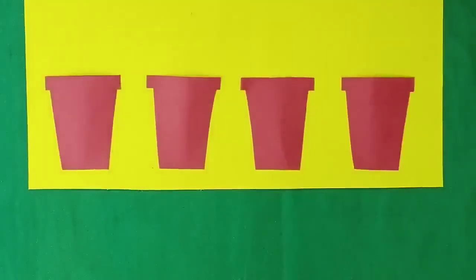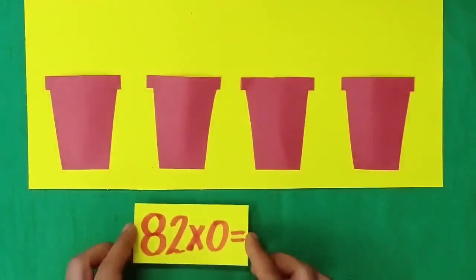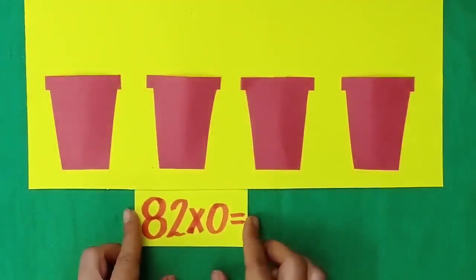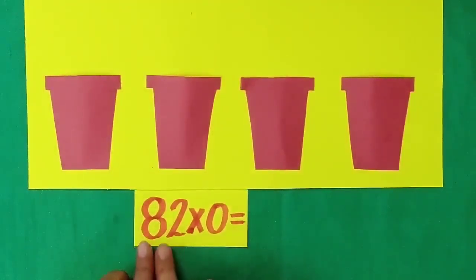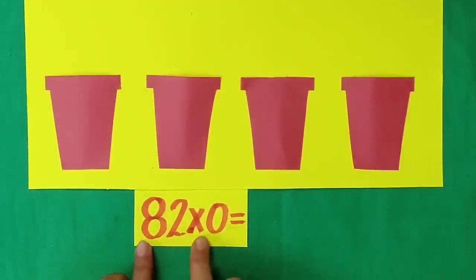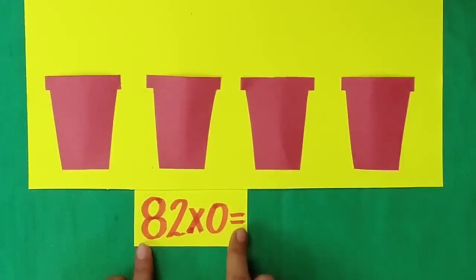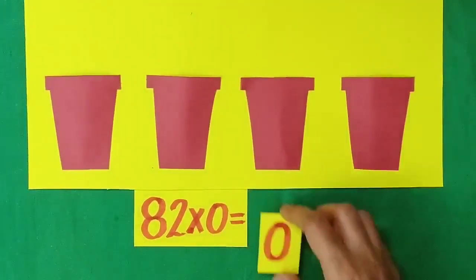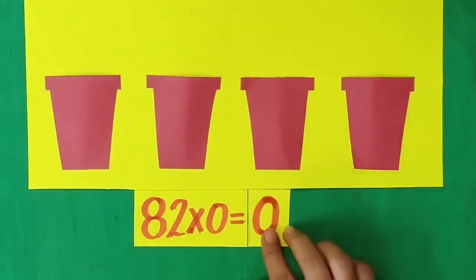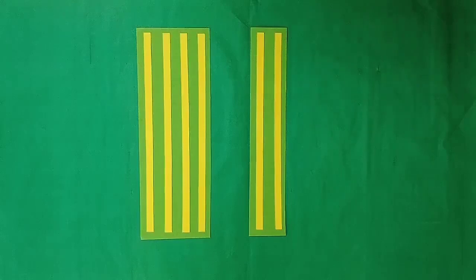Dear students, let's take another example. 82 multiplied by 0 is equal to 0.